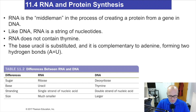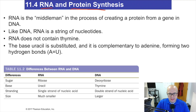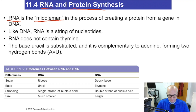Hey guys, welcome back to Chemistry 103 instructional video. I am your professor, Dr. Russell Betts, and now we'll be talking about 11.4 RNA and protein synthesis. Remember, DNA is essentially a code for how a cell needs to make protein. RNA — ribonucleic acid — is what they call the middleman in the process of creating a protein from a gene and DNA.